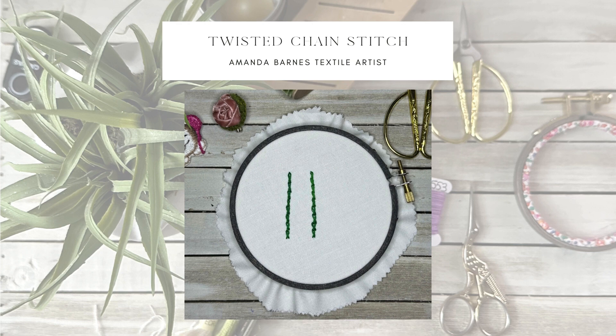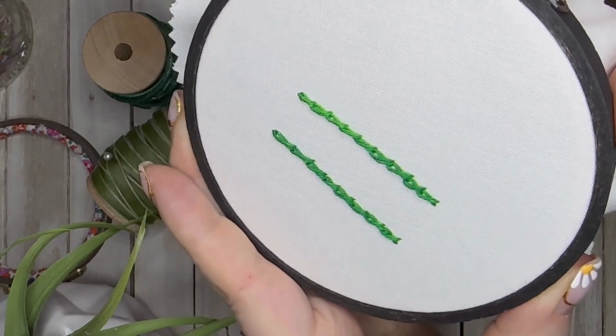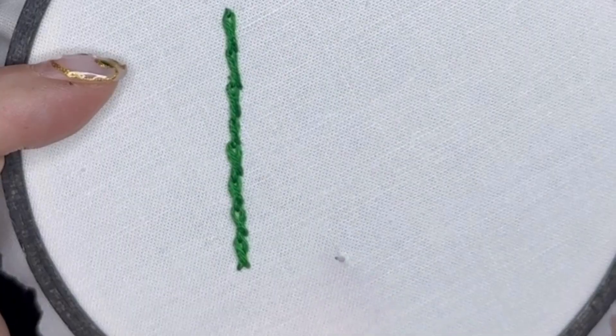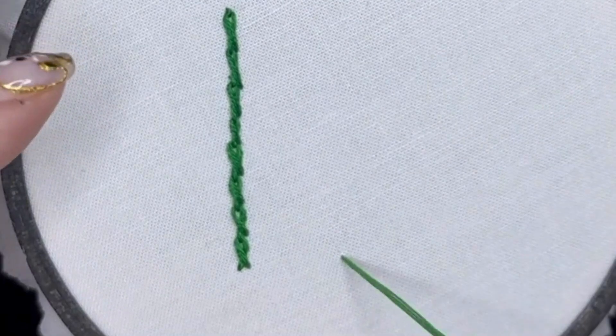Hello lovelies, this is the twisted chain stitch. It's just a variation on the chain stitch and it's great for borders. We're going to start by bringing our needle up through the fabric.